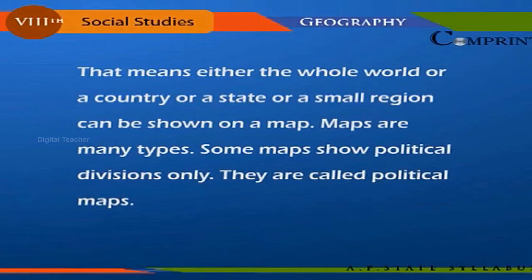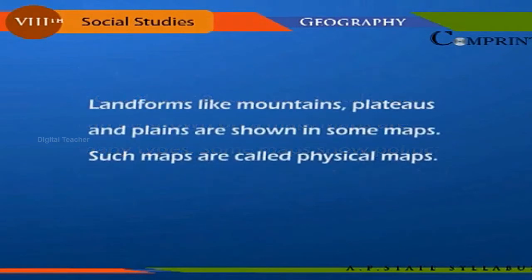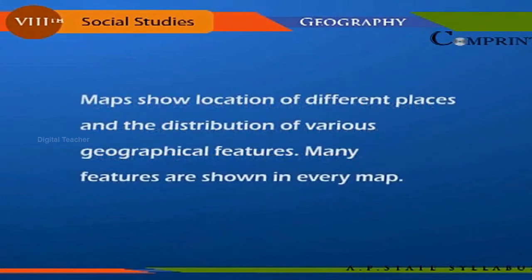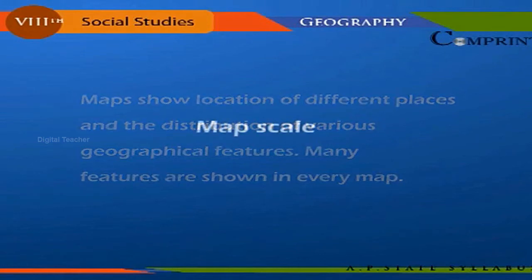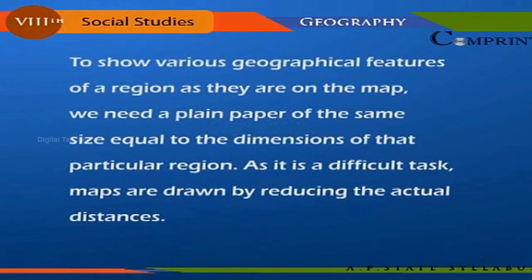Maps are of many types. Some maps show political divisions only; they are called political maps. Landforms like mountains, plateaus, and plains are shown in some maps; such maps are called physical maps. Maps show the location of different places and the distribution of various geographical features.